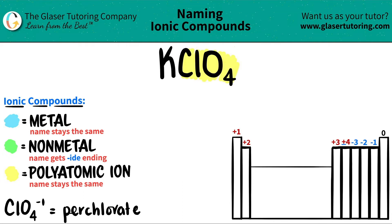The only element that we have left is potassium, which is K, and that's over here on the periodic table. Remember that group one is all metals except for hydrogen — hydrogen is a non-metal — so potassium would be a metal, and that's why it's ionic: we have a metal and then a polyatomic ion.